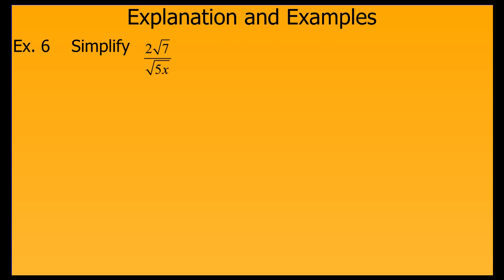Whenever you see a radical in the denominator like this, rationalize the denominator by going through a similar process. In this example, we have a denominator we can't do much with, so we multiply by the square root of 5x over the square root of 5x — which is just another name for 1. This gives us 2 times the square root of 35x in the numerator, and just 5x in the denominator. This is in simplified form.